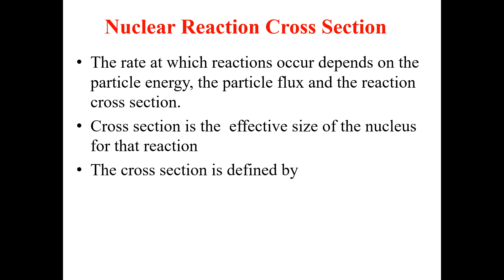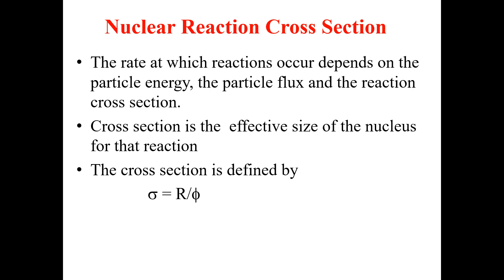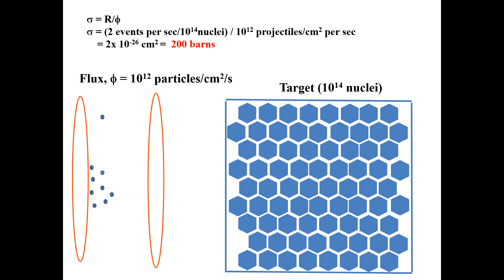The cross-section is formally defined by sigma equals capital R divided by phi. It is basically the event rate per nucleus divided by the incident flux. So sigma equals R over phi, which in other words equals two events per second divided by 10 raised to power 14 nuclei, divided by 10 raised to power 12 projectiles per centimeter square per second. If you put the values and do the calculation, it will be equal to 2 times 10 raised to the power minus 26 centimeter square, which is equal to 200 barns.